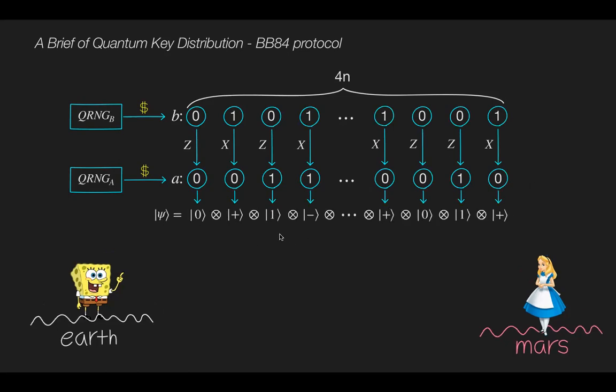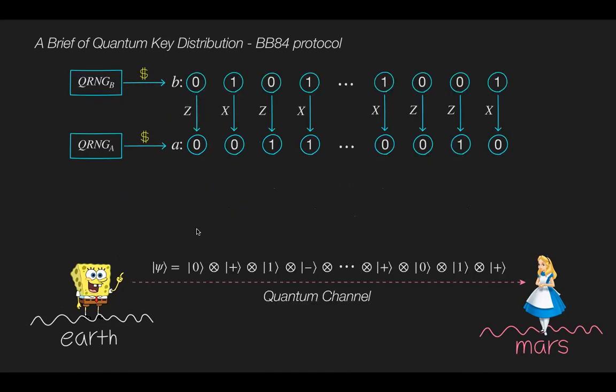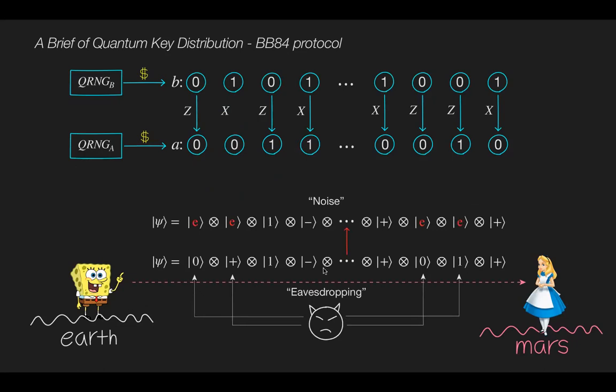At the end of the encoding processes, Bob has a quantum state ket psi. Then Bob sends this state to Alice through a public quantum communication channel between them. An Eve can eavesdrop on each qubit in the state during the data transmission of the quantum channel, but Eve cannot distinguish between two non-orthogonal quantum states. And her eavesdropping implies a disturbance to the signal. So later on, Bob and Alice can find any noise or eavesdropping to the signal.